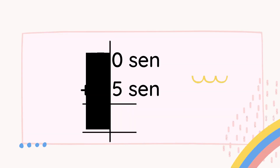Now let's do the counting. We're going to start to find the answer for place value 1s first. We have 0 and 5. Put 0 at your mouth and 5 at your fingers. We do count on: 0, 1, 2, 3, 4, 5. When you get the answer 5, you write the answer 5 in the answer section at the bottom.